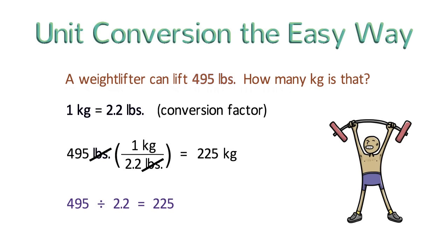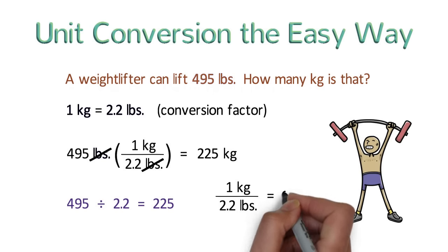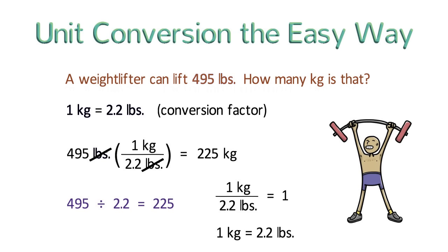There is one more thing that we should notice about this problem. The fraction 1 kilogram over 2.2 pounds actually equals 1, because 1 kilogram equals 2.2 pounds. In fact, any time we do unit conversion, we are simply multiplying our initial quantity by a conversion factor fraction that equals 1. Okay, now that we are experts at this technique, let's try a slightly harder problem.